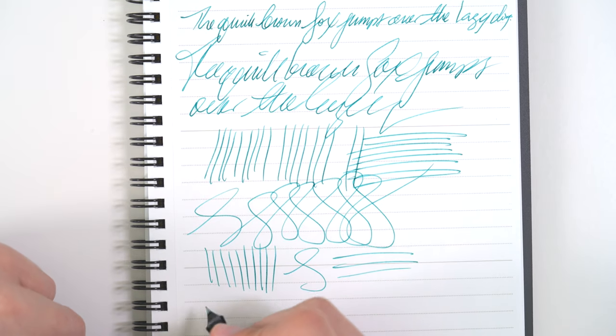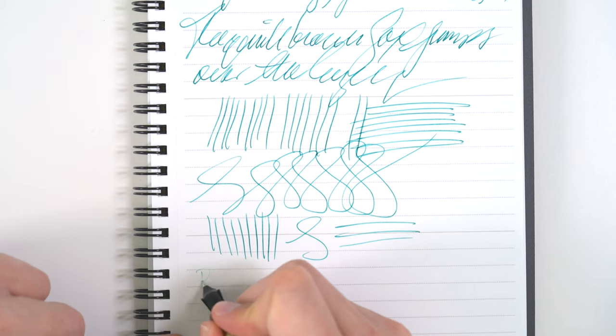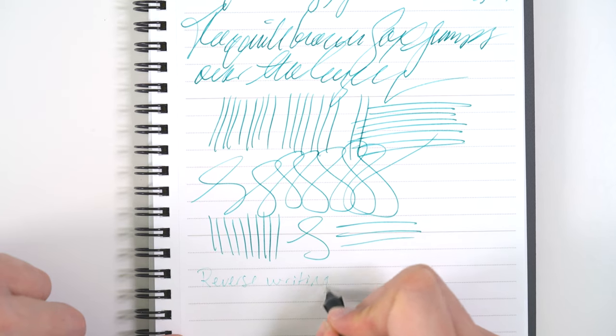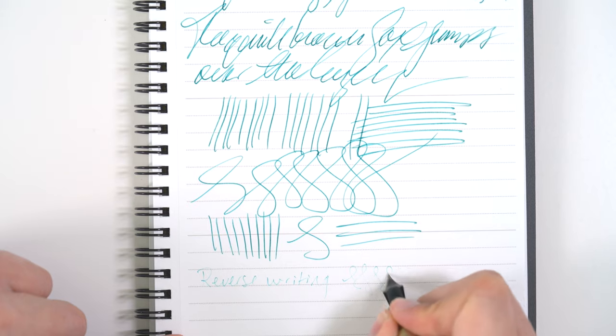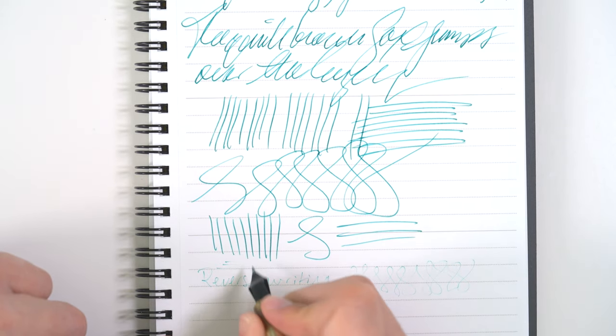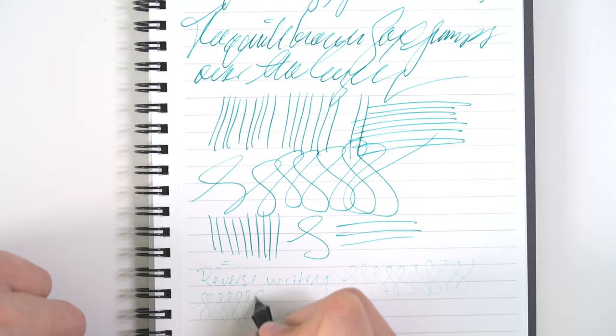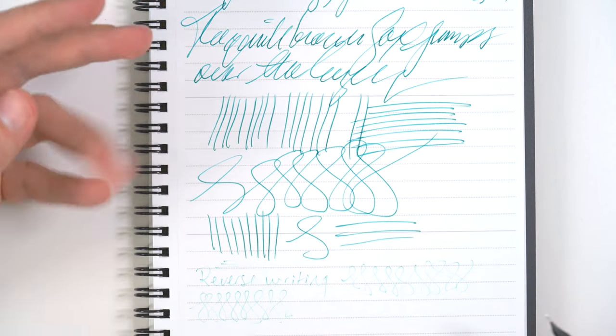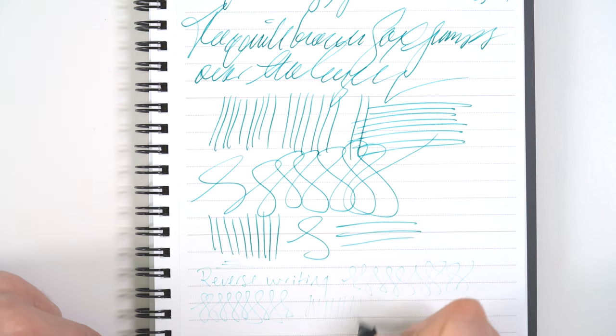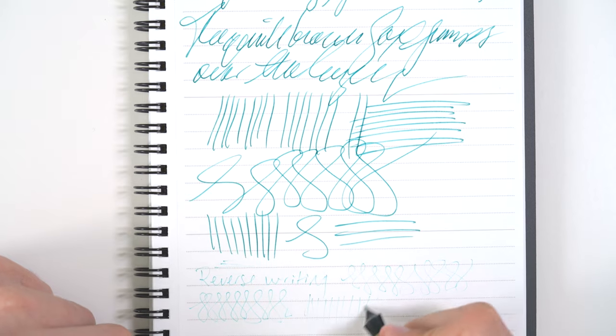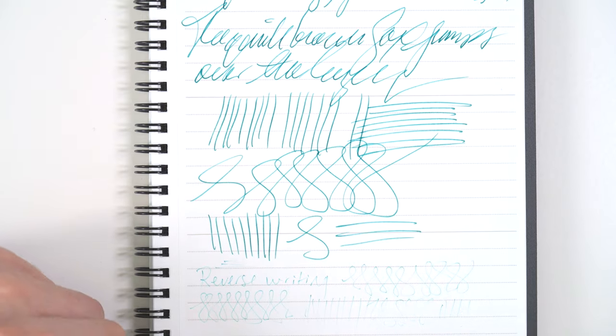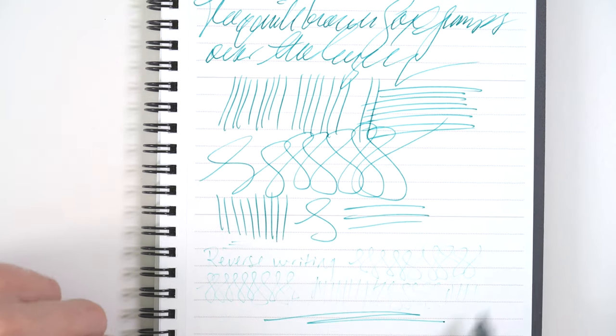Now, you can try reverse writing. Seems like it's struggling there. It's already an extra fine. It's doing it. Nah, I would say no. I wouldn't. It's relatively smooth, but I personally wouldn't bother with that.